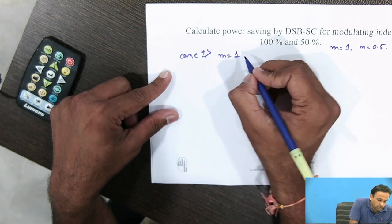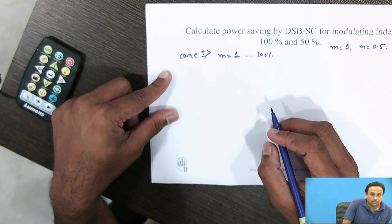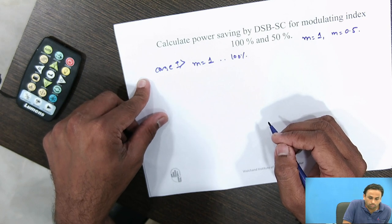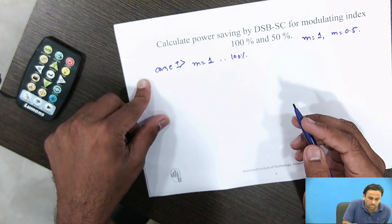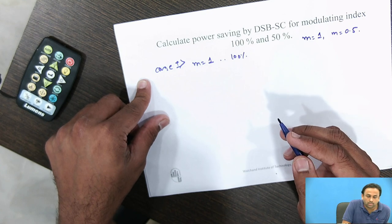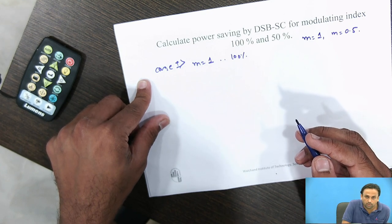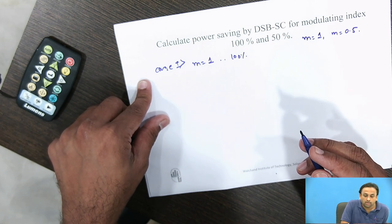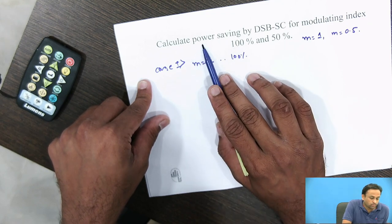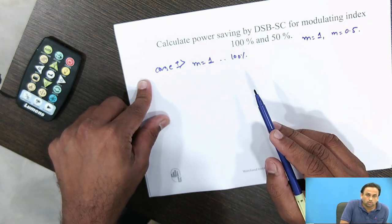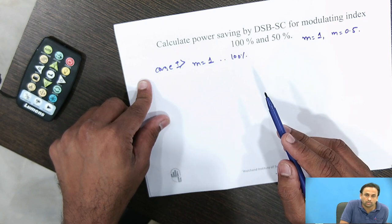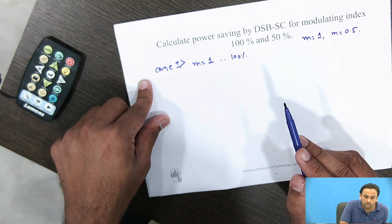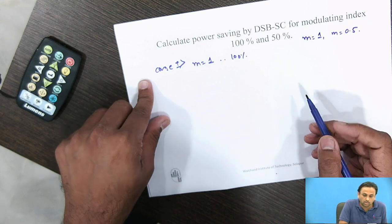For Case 1, m = 1 (100% modulation index), we calculate the total power for the AM signal as well as for the DSB-SC signal. The percentage power used by DSB-SC is computed, and then the power saving by DSB-SC equals total power minus the power used by DSB-SC.